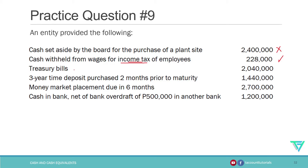Next is treasury bills. It is a cash equivalent because the problem is silent as to its term or its maturity. Remember the rule: if the problem is silent, we assume that treasury bills is a cash equivalent.